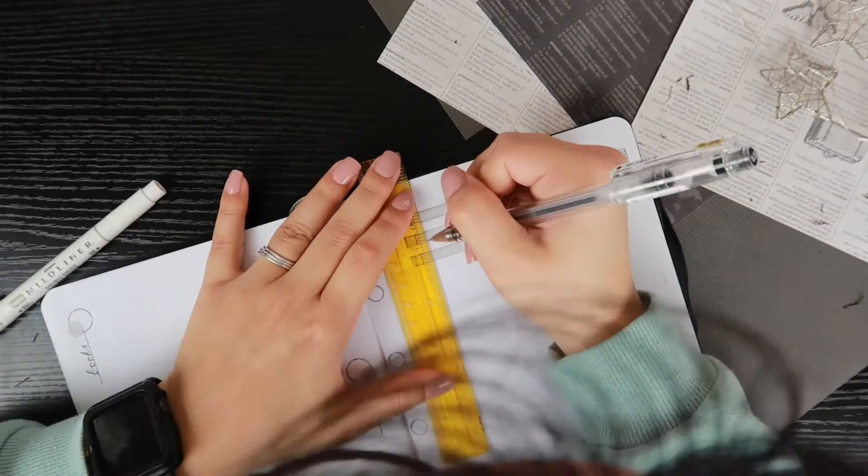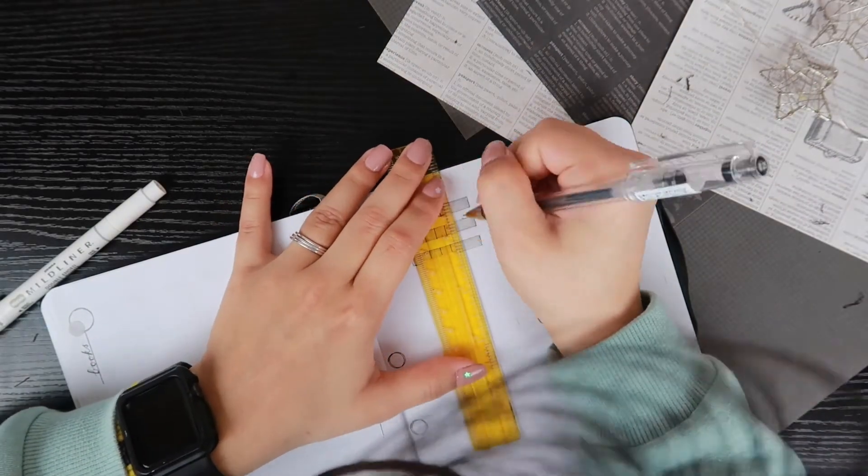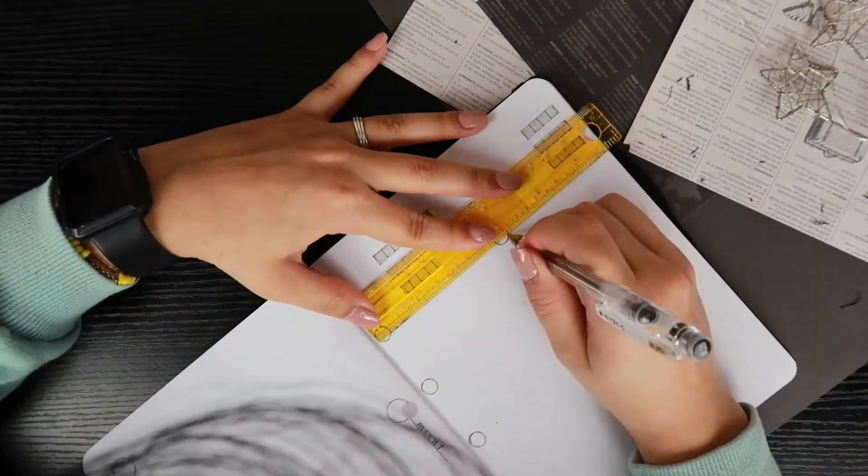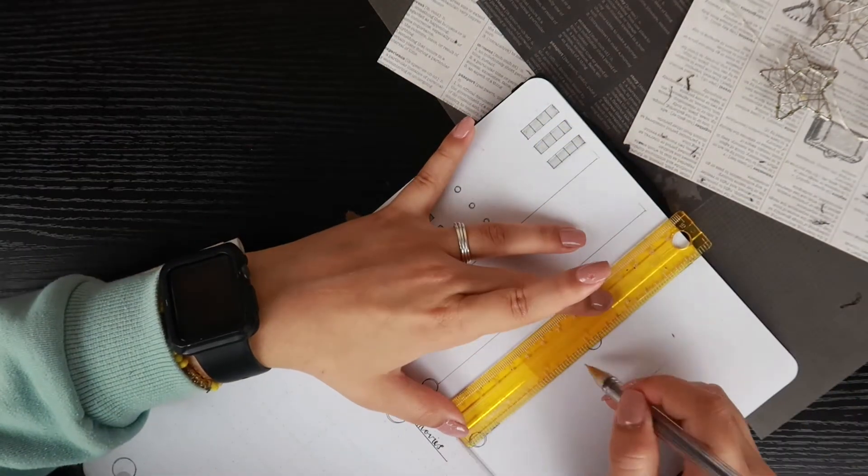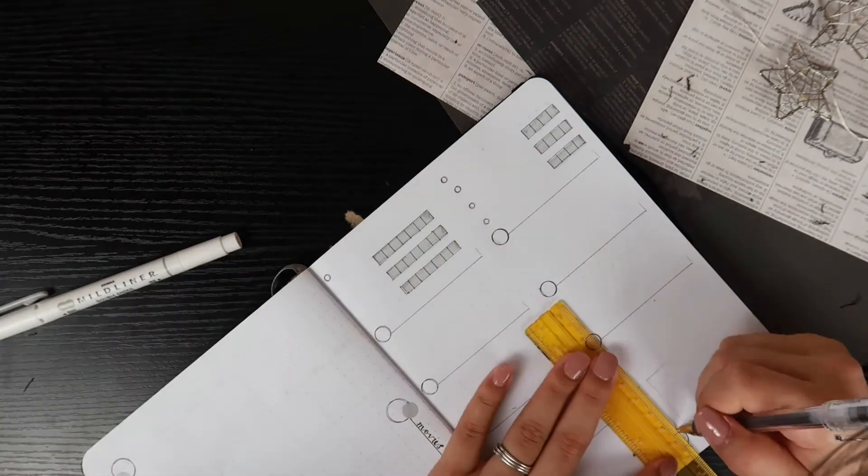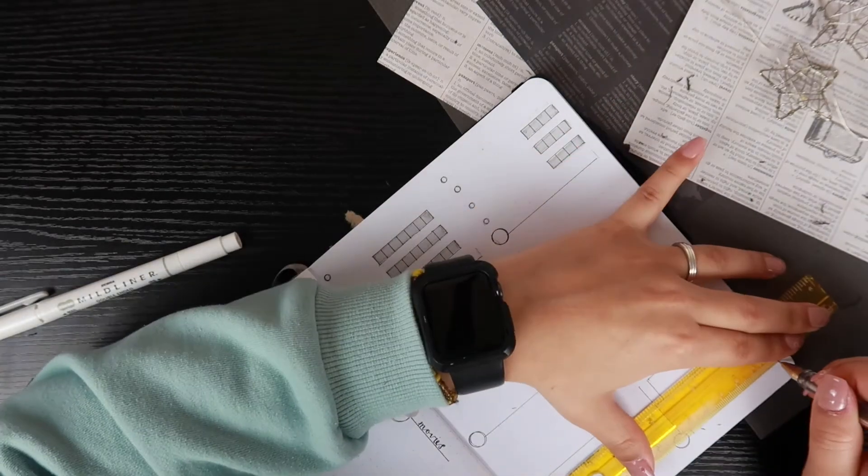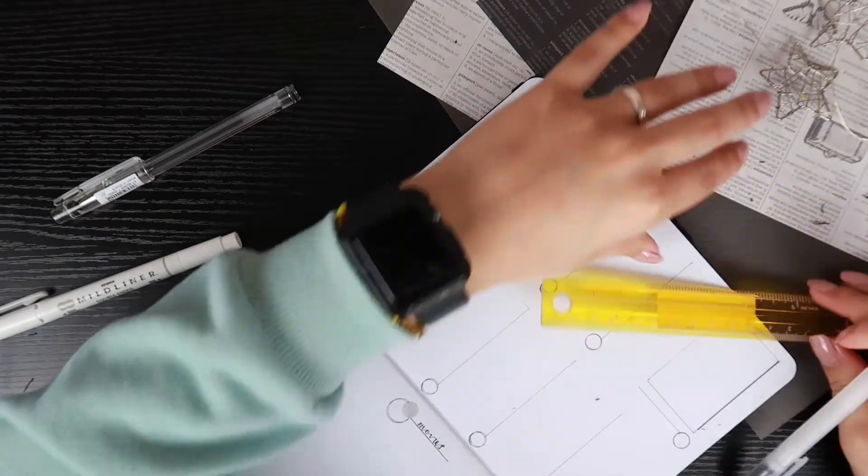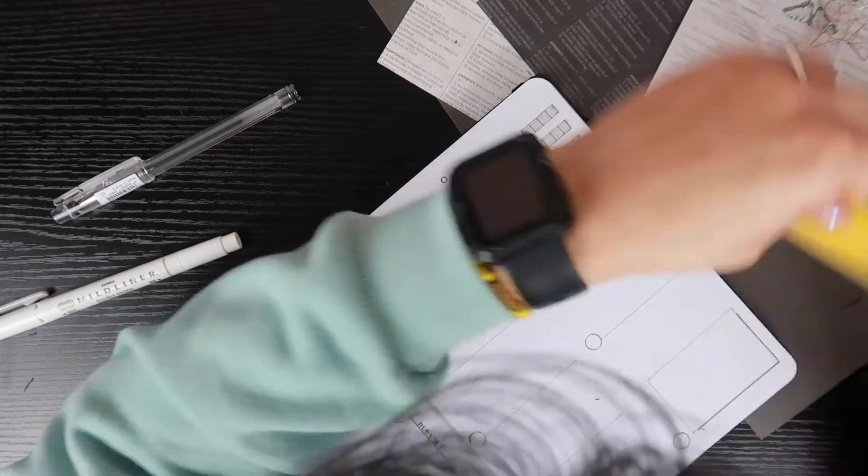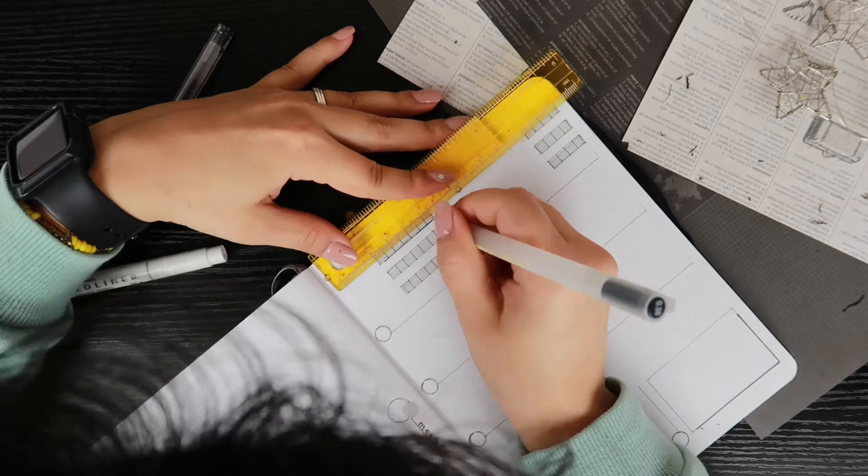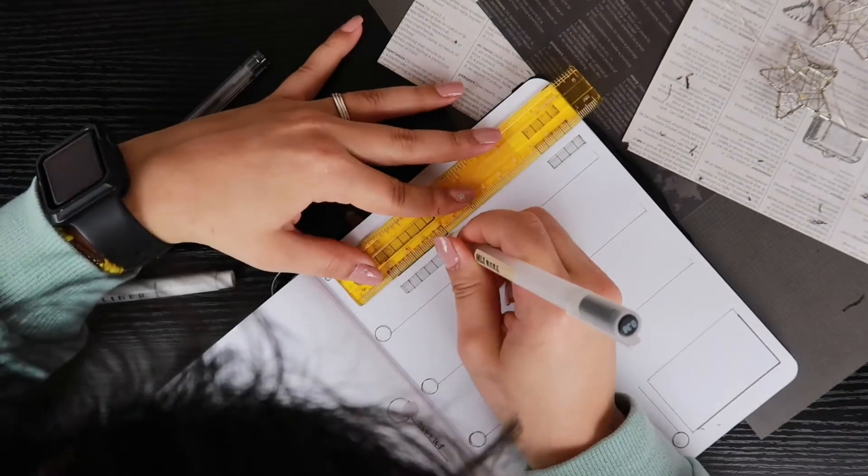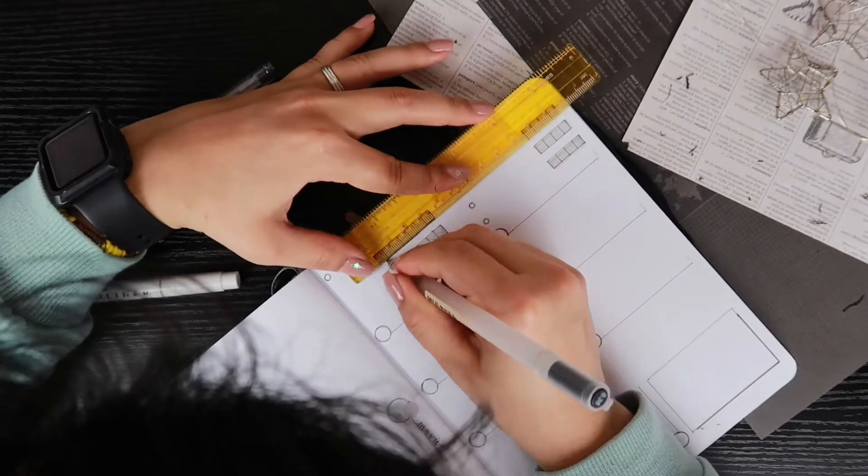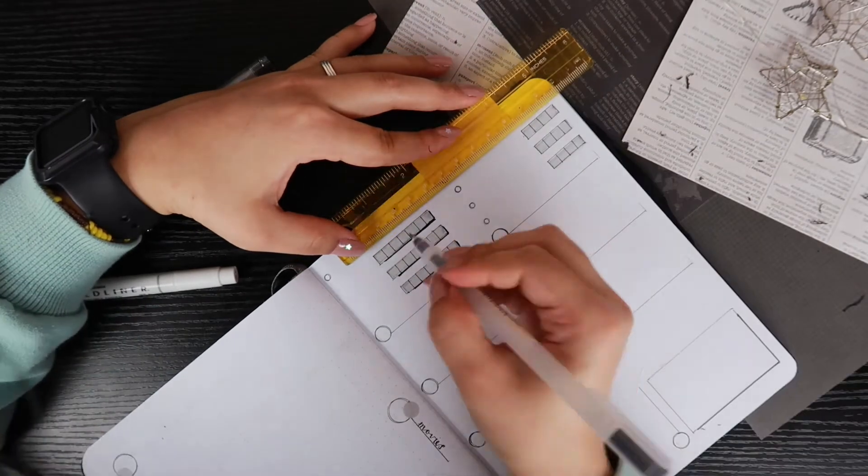And then on the left I have seven boxes for the habits that I want to track throughout the week. At the bottom I included a little box for next week's things that I need to remind myself to include. I decided to add a drop shadow to the habit tracker, the filming task area, and the next week section. I think it adds a little more pizzazz, gives it a little more dimension.